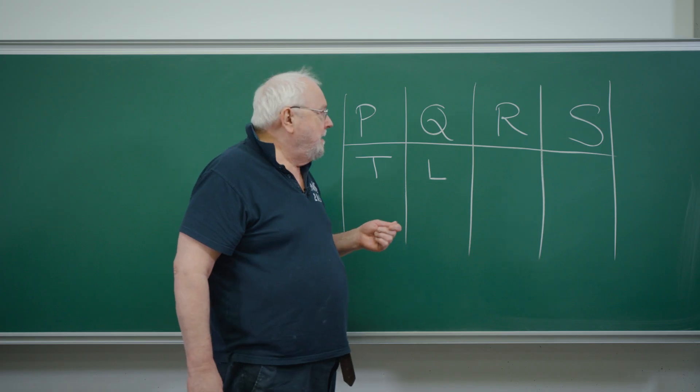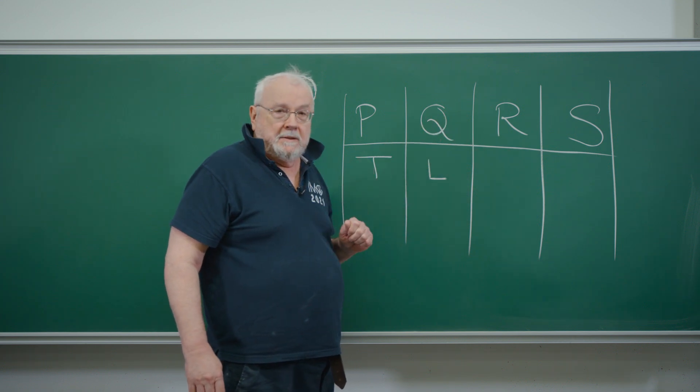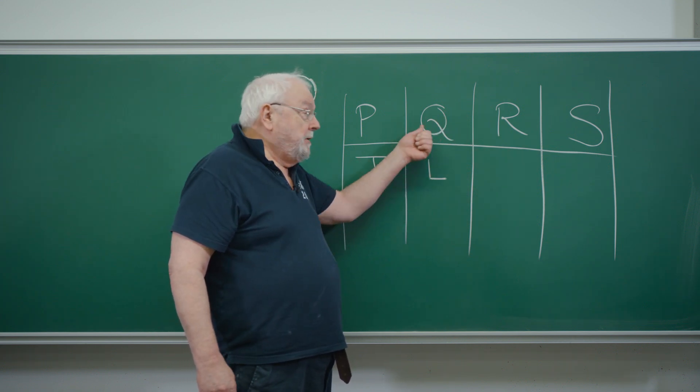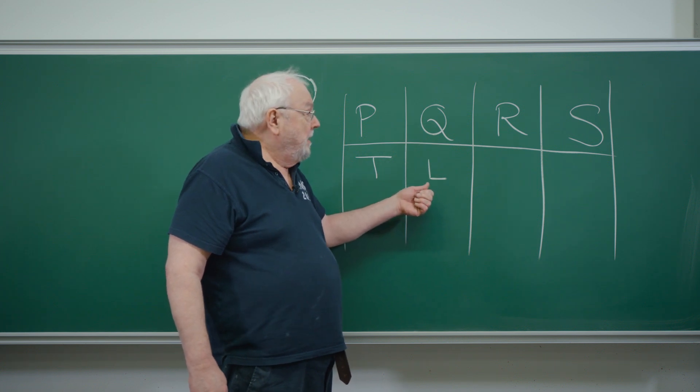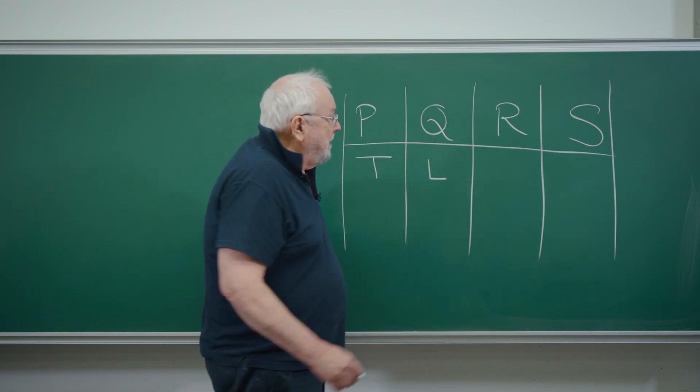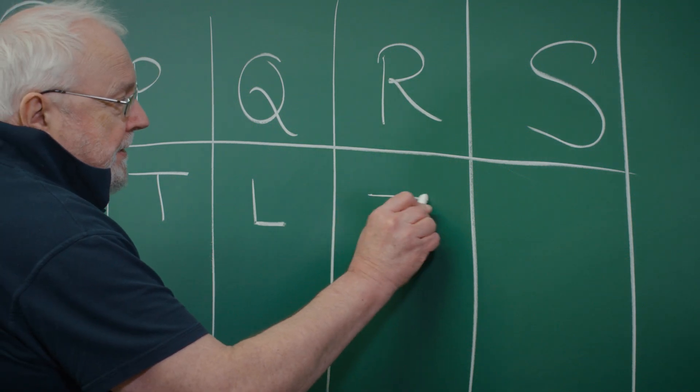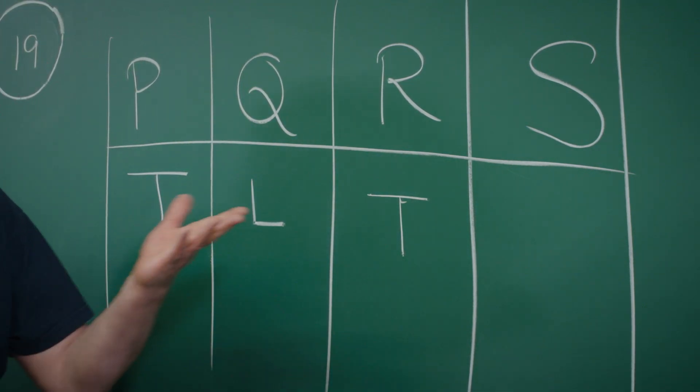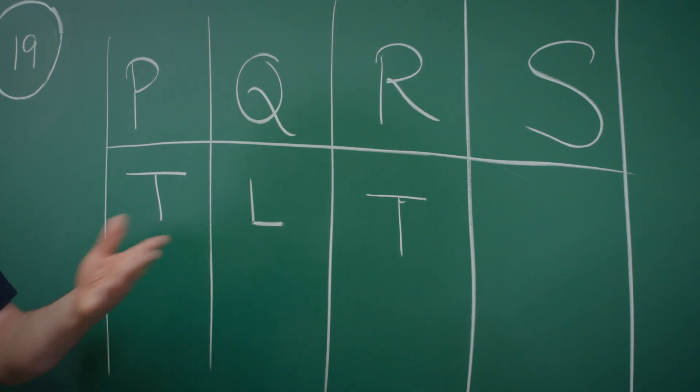Q says that R is a liar. Q says that R is a liar, but Q is a liar. So Q isn't telling us the truth. When Q says that R is a liar, so R is a truth-teller. R says that P is a truth-teller. So that's true.